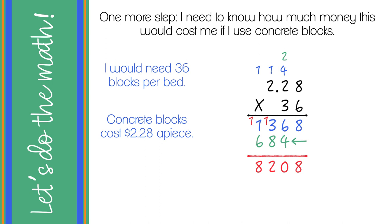Now obviously the correct answer cannot be $8,208 because that would be ridiculously expensive. Remember, we had a decimal in our first number, our 2.28. So we have to put the decimal in our answer. All you have to do is look at your top number and count how many places over the decimal point is — working from right to left, it's two places — so the decimal goes between the 2 and the 0. So $82.08 would be the total cost of one bed using concrete blocks.